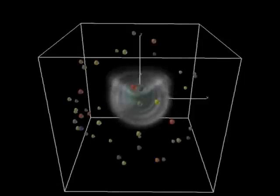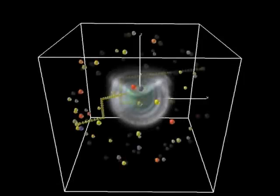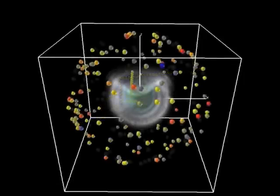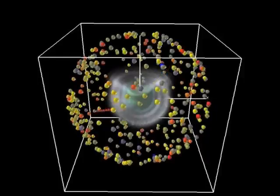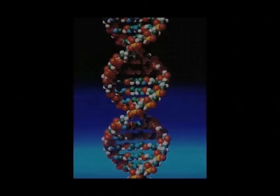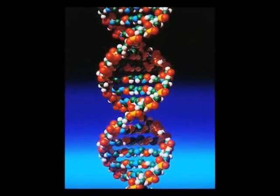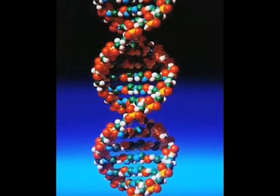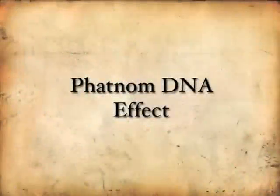This is important to understand because another researcher named Vladimir Popanov measured tiny particles of light called photons inside a vacuum tube. The photons were scattered as expected. A sample of DNA was then entered into the vacuum tube and they measured the photons again. They found that the particles of light aligned themselves along the axis of the DNA. Then, as they removed the DNA sample, the photons remained aligned to the same form of the DNA even though no DNA was present. This is what is known as the phantom DNA experiment.